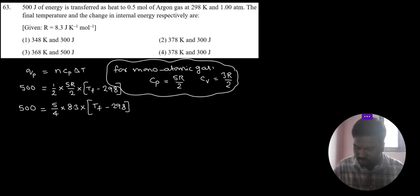So if we simplify, we will get Tf value. So here 500 times cancel and 4 into 100, 400 is equal to 8.3 times final temperature minus 298 Kelvin.